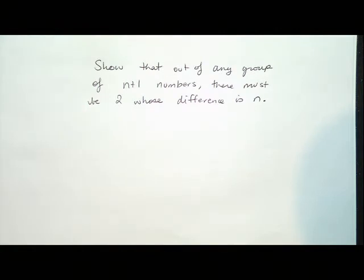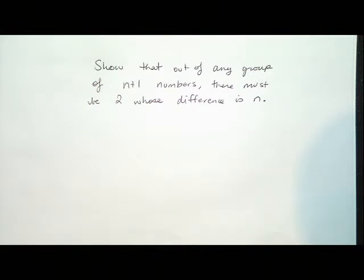Show that out of any group of n+1 numbers, there must be two whose difference is a multiple of n. Since we're asked to show there 'must be' some number of something, it's always a pigeonhole principle problem.